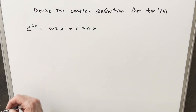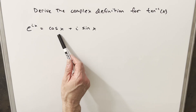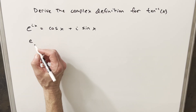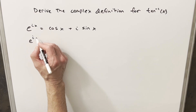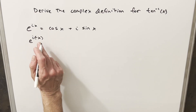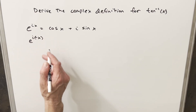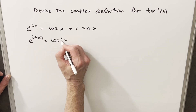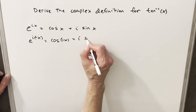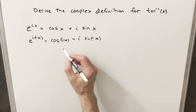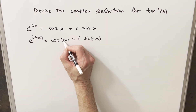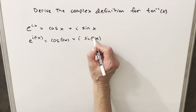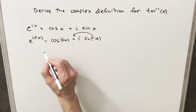We have Euler's formula here, and what I also want to do is look at e to the minus ix. I can write it this way, so we can input the minus x into this formula. Just plugging in here, we're going to have cosine of minus x plus i sine of minus x. But cosine is an even function, so that's just going to become a plus, and sine is an odd function, so we can take our minus sine out front.